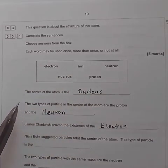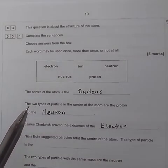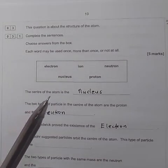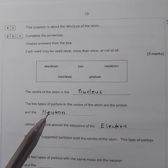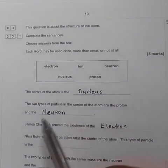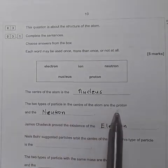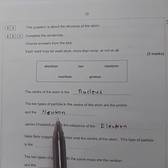So let's begin. We are being tested about the definition and the people who identified or who discovered the above particles in an element. The center of an atom is called a nucleus. That one is already written down. The two types of a particle in the center of an atom are the proton and they are definitely the neutron.